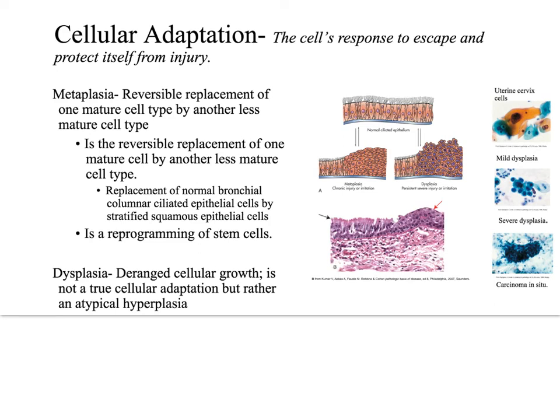To recap: cellular adaptation is the body's response to potential injury — it is our natural response to maintain homeostasis. If the stimulus causing the cellular adaptation abates, or if the cell adapts adequately, the cell can then survive, at least temporarily. However, if the stimulus persists or the cells fail to adapt, the result is cell injury or death.